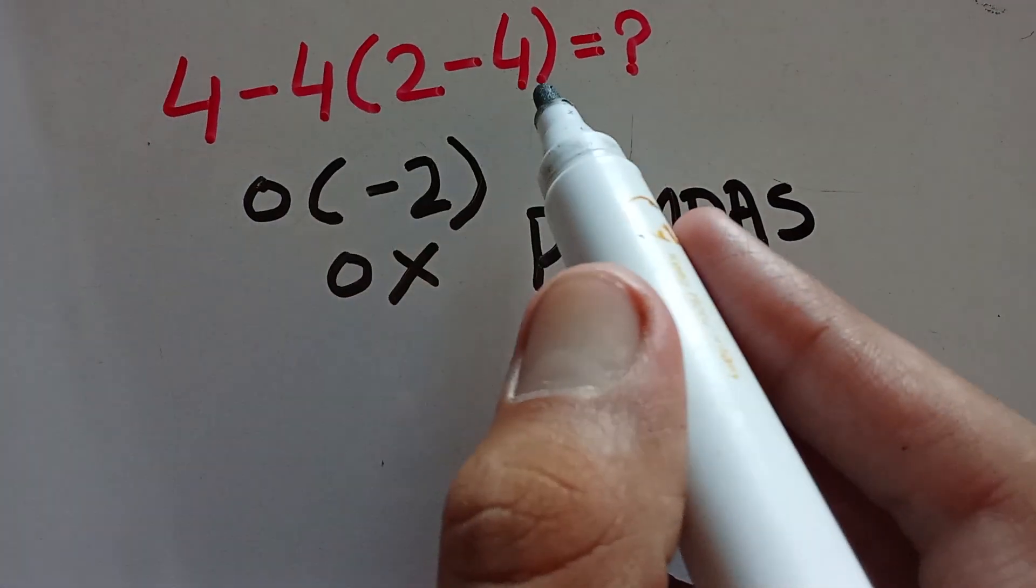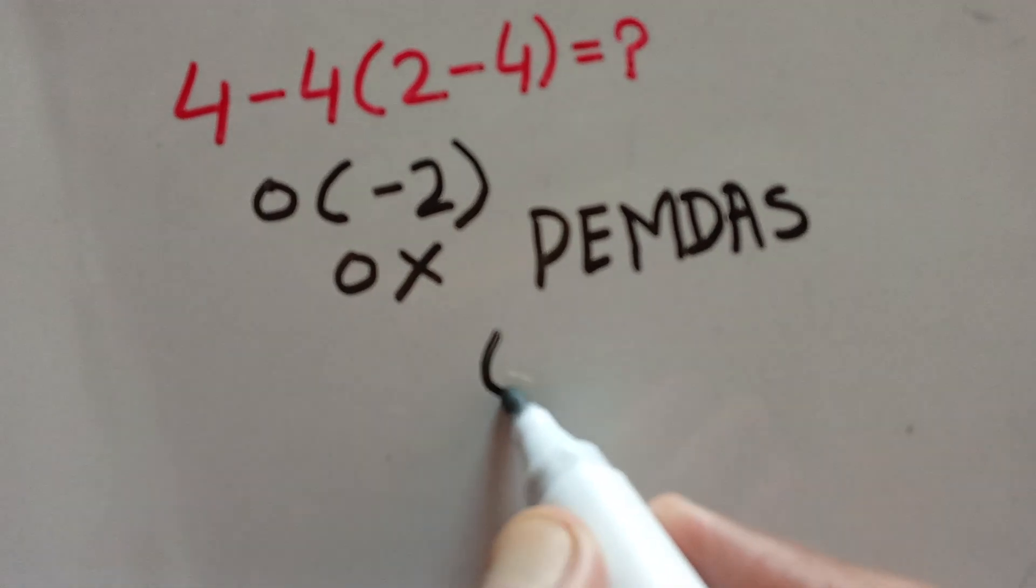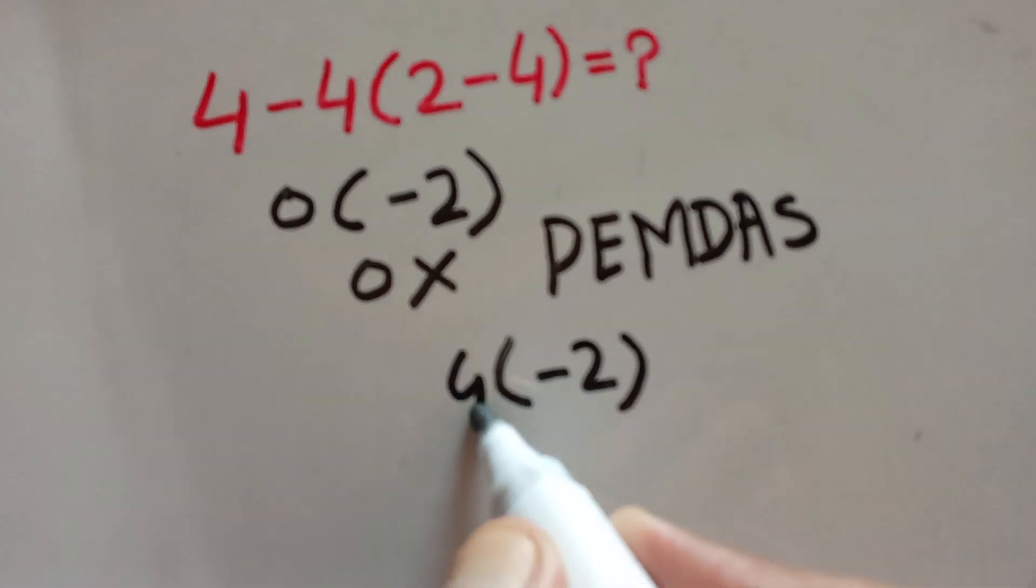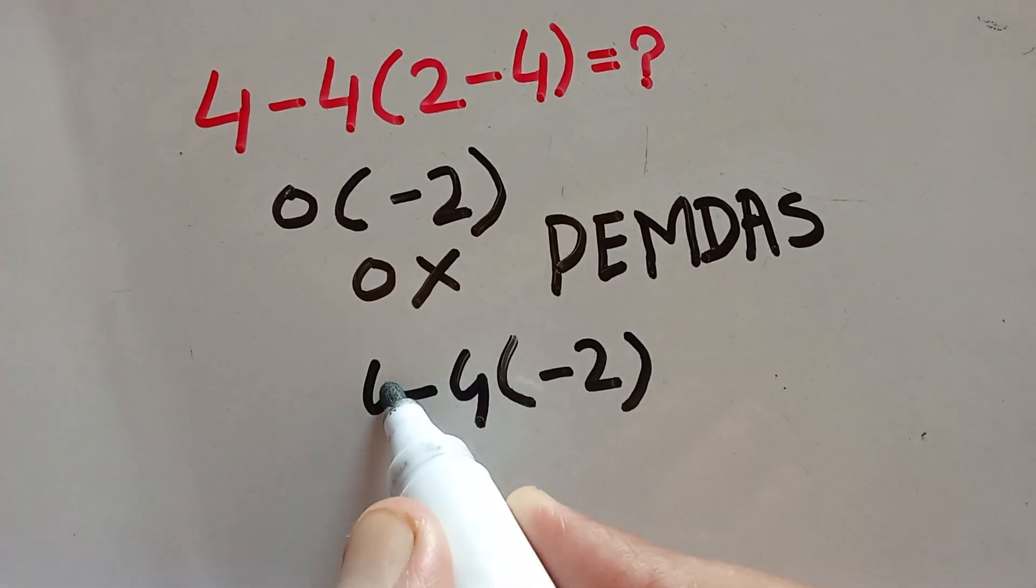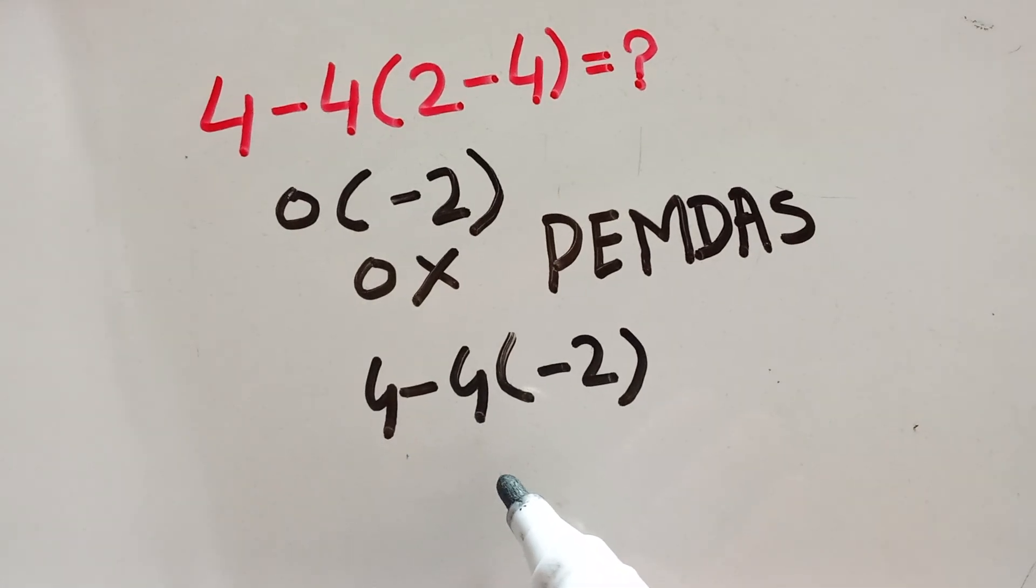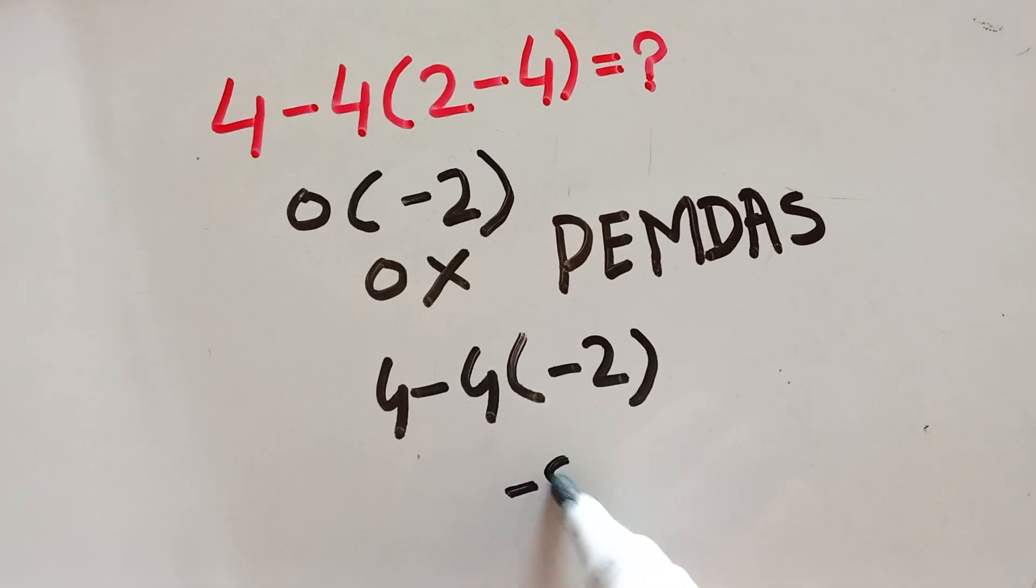So firstly we solve the parenthesis: 2 minus 4 equals minus 2. Now we have 4 minus 4 times minus 2. 4 times minus 2 equals minus 8, so we have 4 minus minus 8.